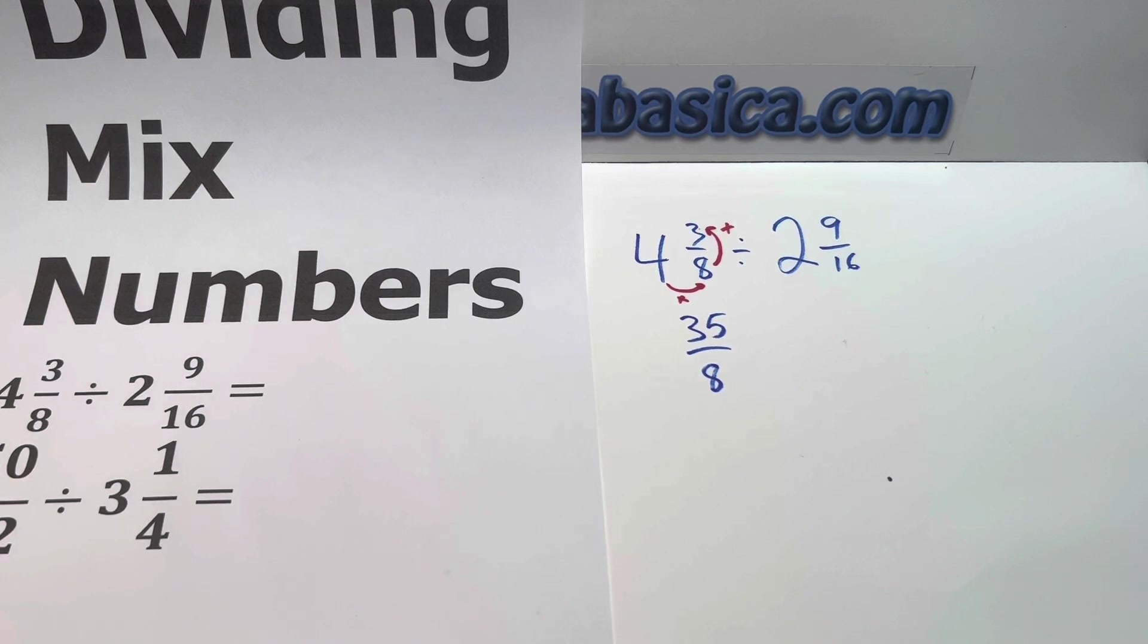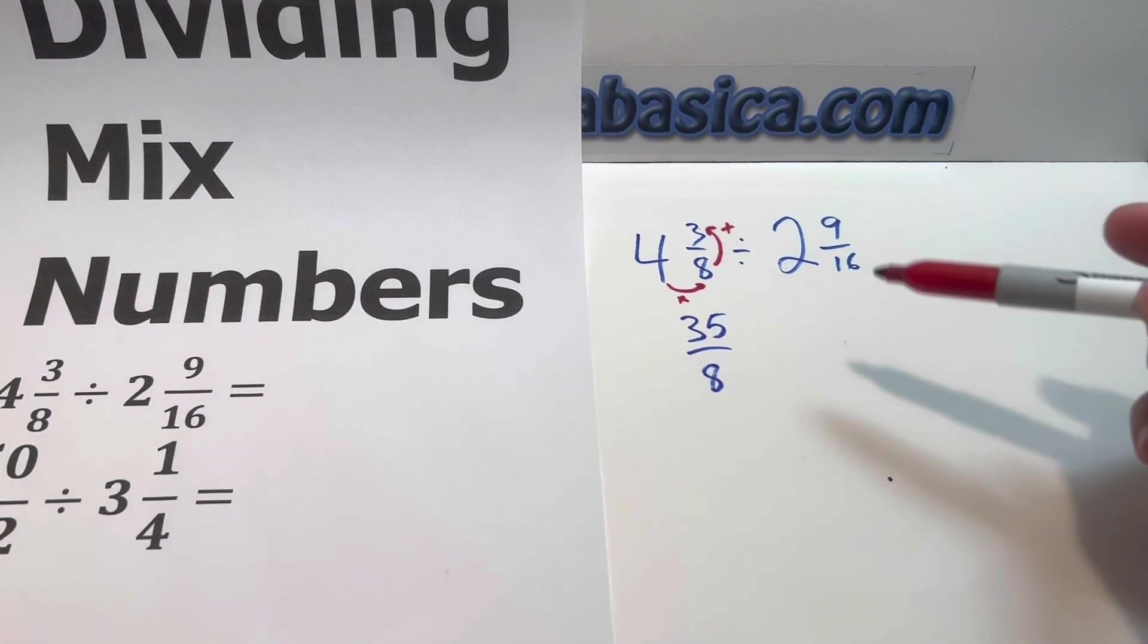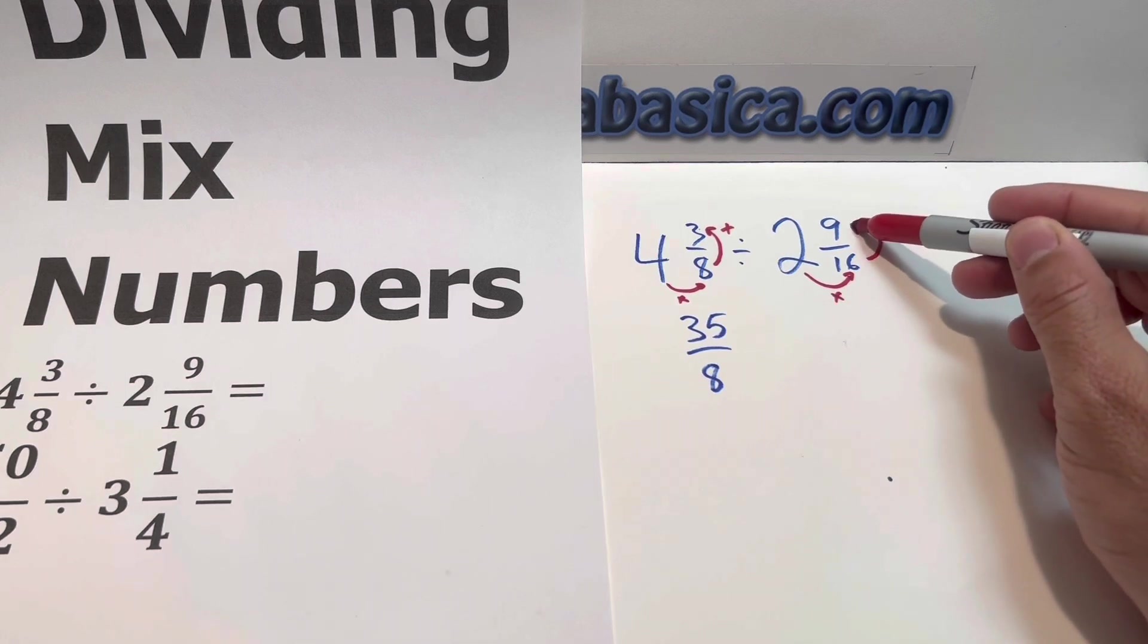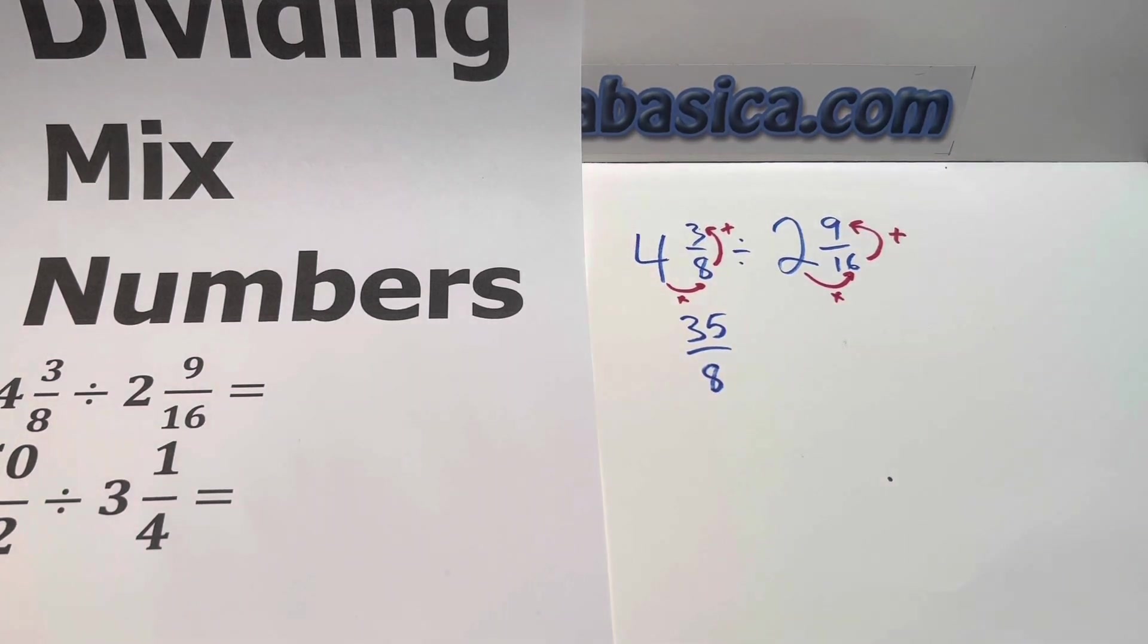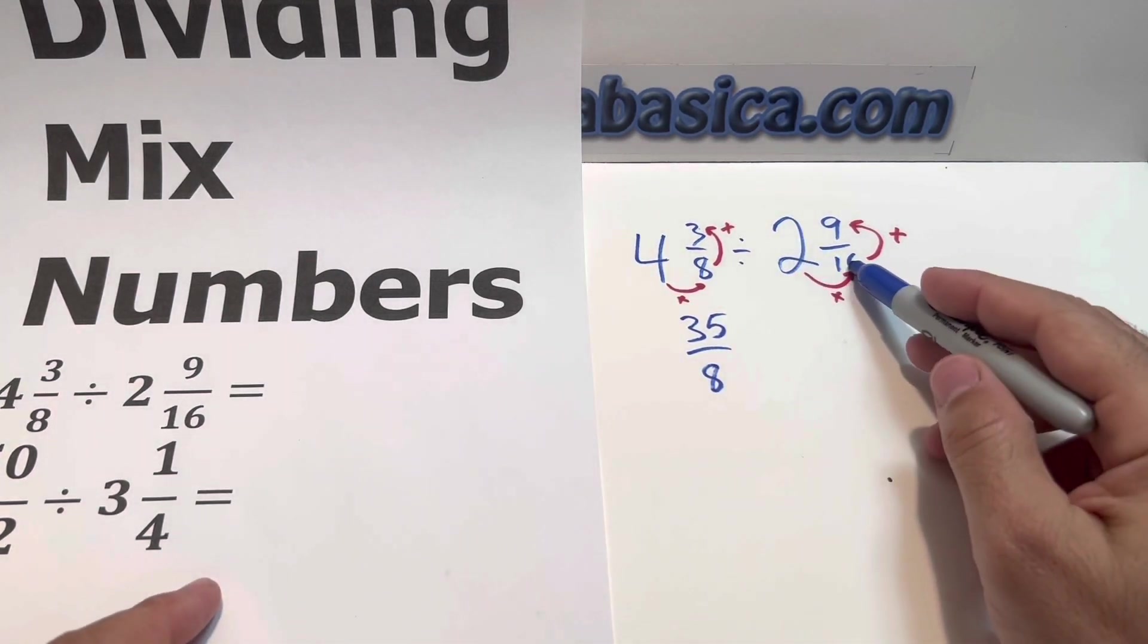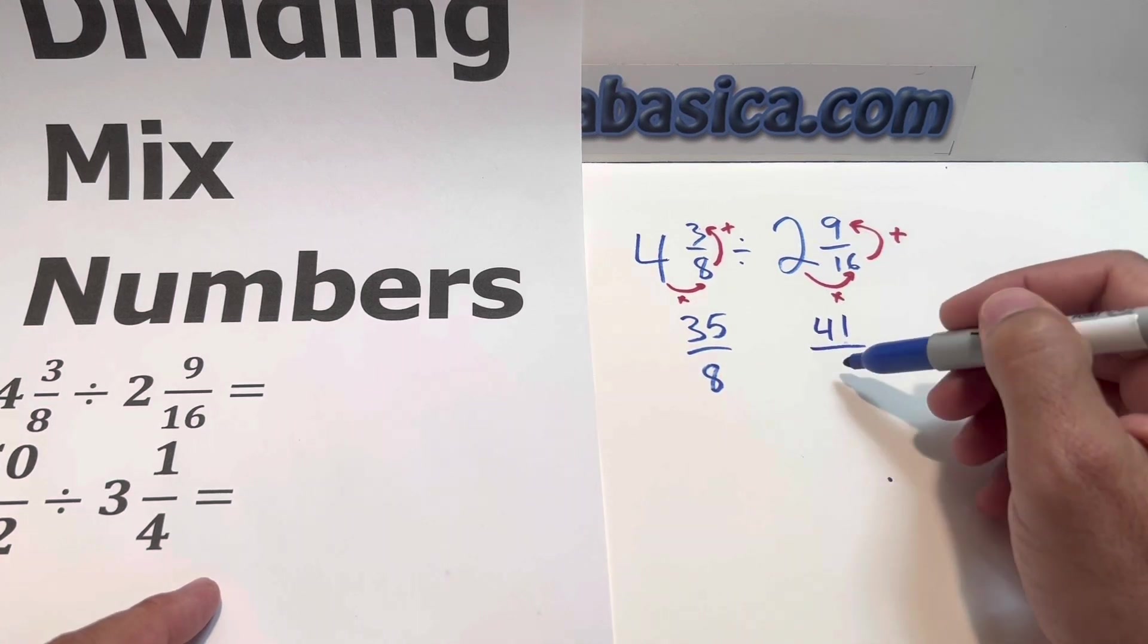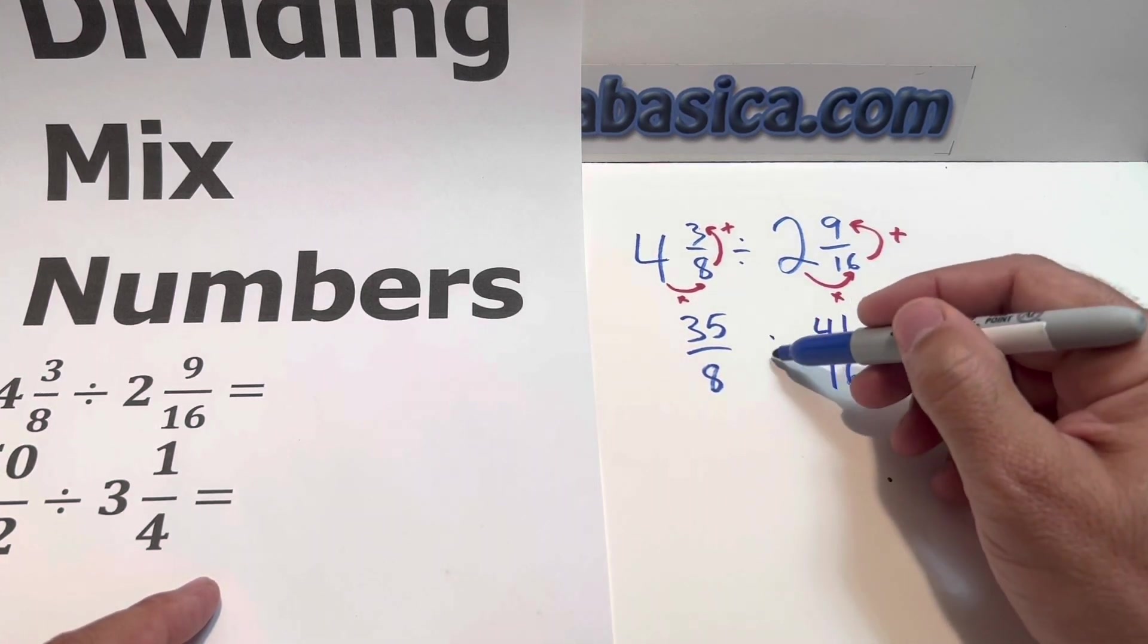Divided by, we follow the same process. Multiplying by this, and then you add the top. That's the process to change mixed number into a fraction. So that's 2 times 16, 32 plus 9, 41. 41 divided by 16. So that's a division.